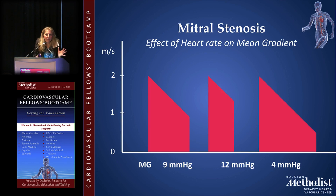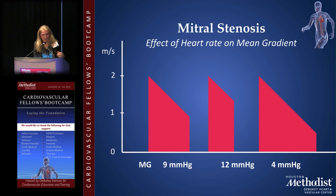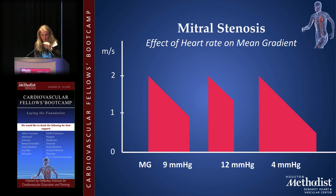This demonstrates how heart rate affects mean gradient. With a very fast heart rate, the diastolic filling period is very short — all the 4V-squared values are very tall, so the mean gradient is very high. With a very slow heart rate, half of those 4V-squared values are tall and half are short, so the mean gradient is much lower.